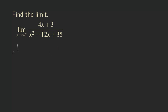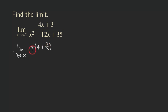So first, we have this limit and we want to factor out the highest power of x from both the top and bottom. For the numerator, you can see that the highest power is going to be x to the first. So we are going to factor out the x from the top, giving us x times (4 + 3/x). You can do a quick check: x multiplied by 3/x gives us 3 because the x's cancel. So now the numerator is done.